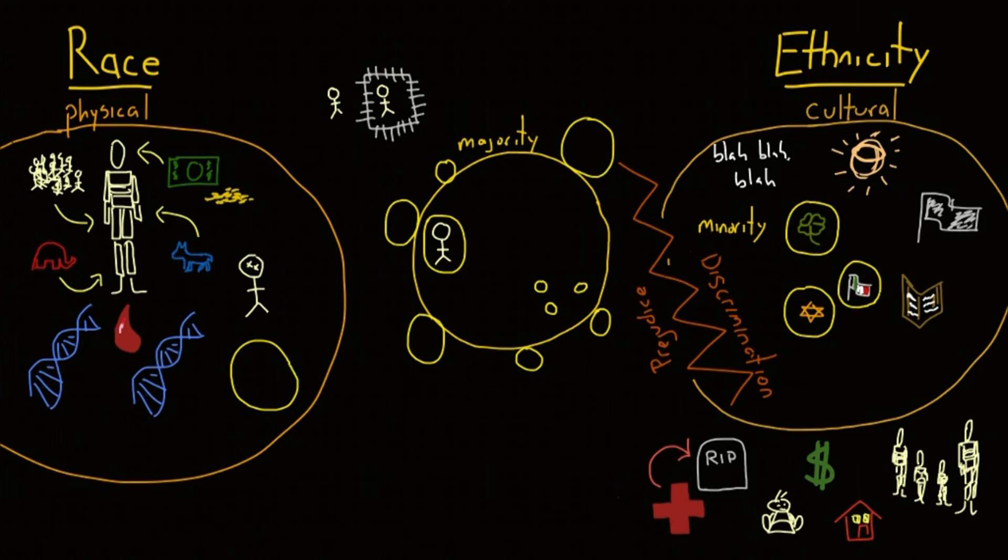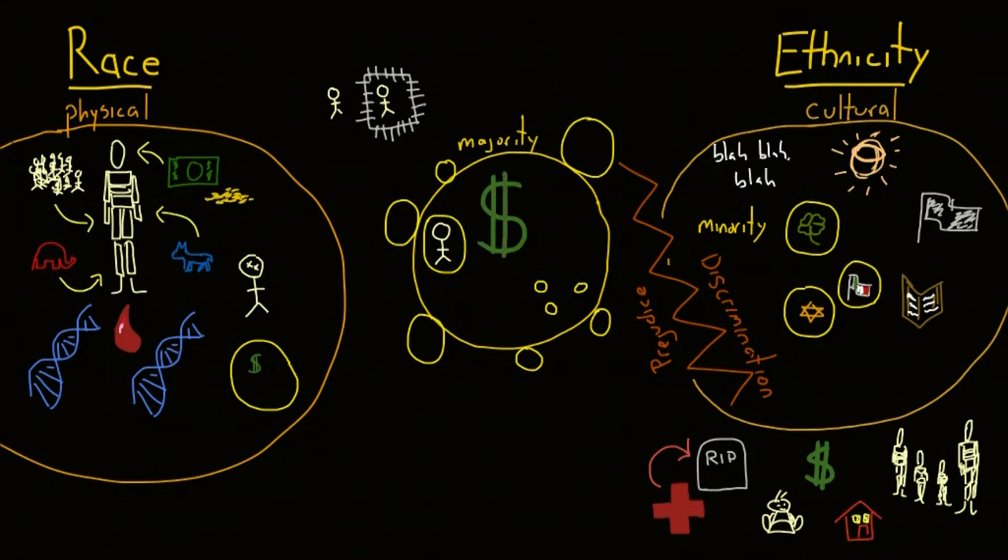You can see this in the labor force of the United States. There is a myth in the United States that everyone has equal opportunities in life, including access to education. In reality, different races tend to be stereotyped for certain jobs. Minorities are expected to have lower paying jobs, while majorities are expected to have higher paying jobs.